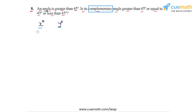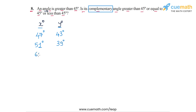Let's say the original angle, which is greater than 45 degrees, is 47 degrees. In this case, the complementary angle will be 90 minus 47 degrees, which equals 43 degrees. Let's say the original angle is 51 degrees — the complementary angle will be 39 degrees. And if the original angle is 60 degrees, then the complementary angle will be 30 degrees.